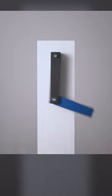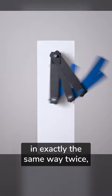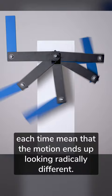One property of chaotic systems is that, no matter how hard I try to set this off in exactly the same way twice, minute differences between the way I release the pendulum each time mean that the motion ends up looking radically different.